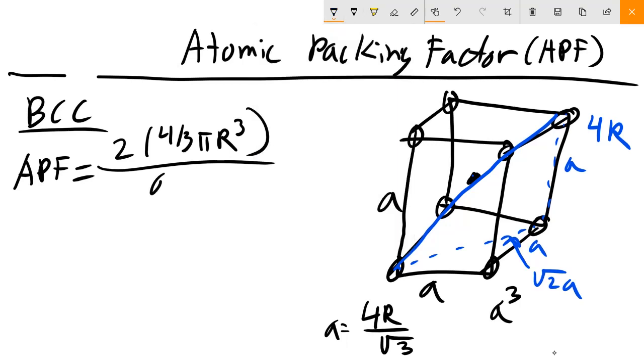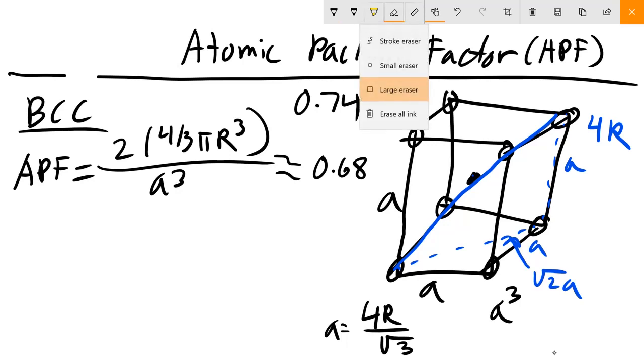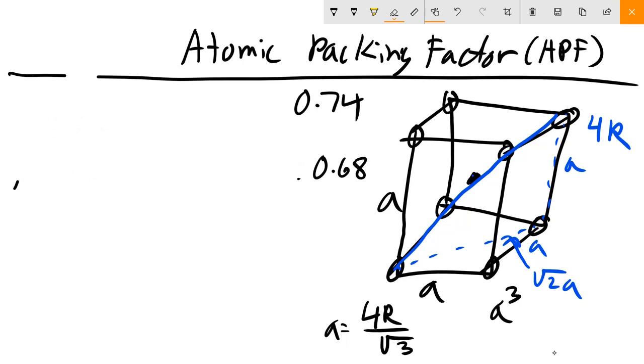We know that this is going to be a cubed. Once you do the math here, you'll find that it is 2 times—sorry, it's going to be 0.68. Again, not our magic number that we're looking for, 0.74. So BCC is not close-packed either. You've got one left. Let's see if we're lucky this time.